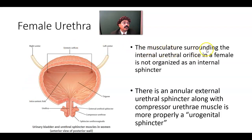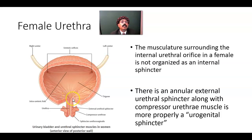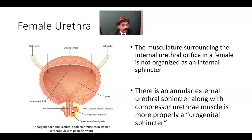The musculature surrounding the internal urethral orifice in a female is not organized as a distinct internal sphincter, unlike in the male. However, there is an annular external urethral sphincter, along with the compressor urethrae muscle. As the urethra passes through the urogenital diaphragm, this is referred to as the urogenital sphincter.